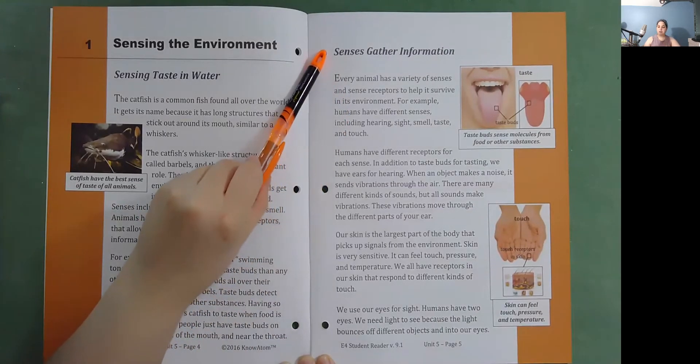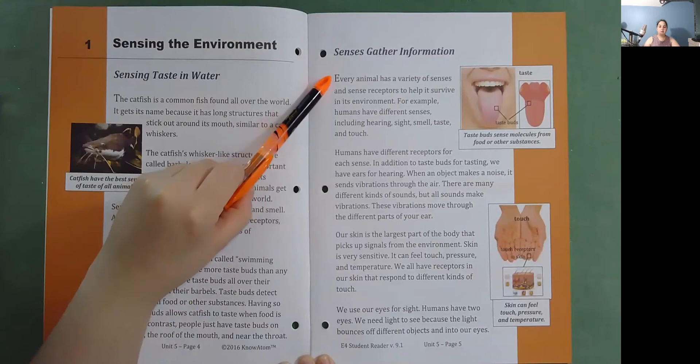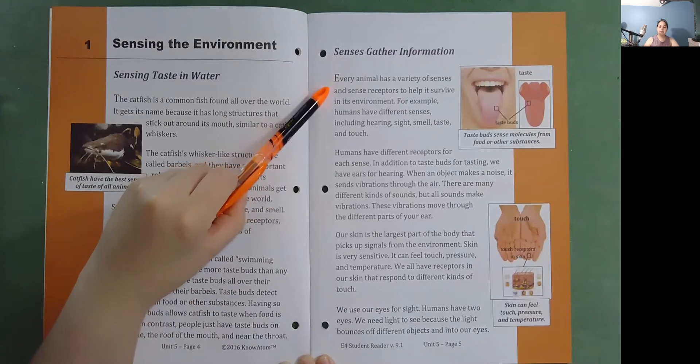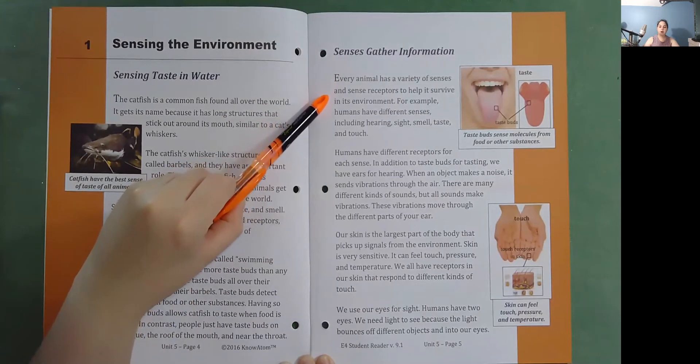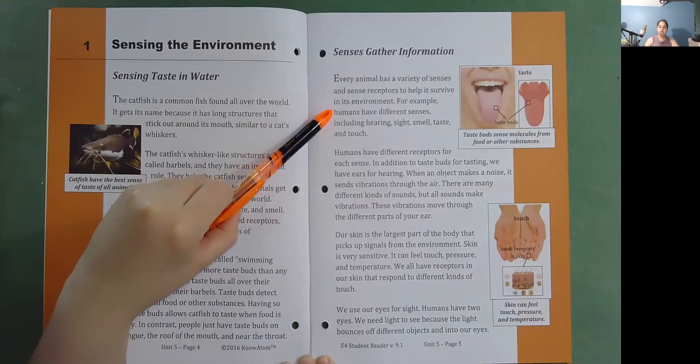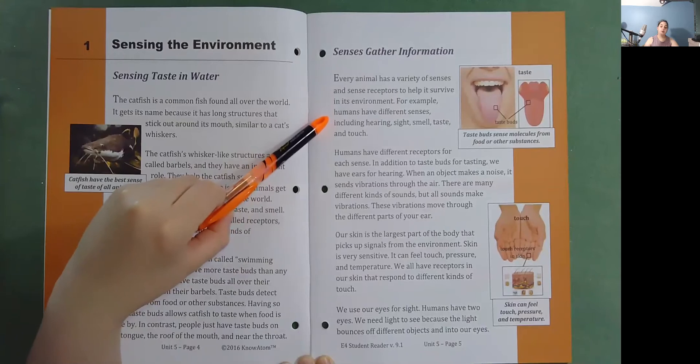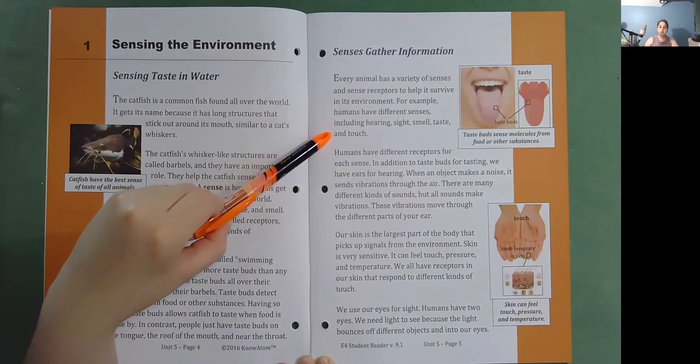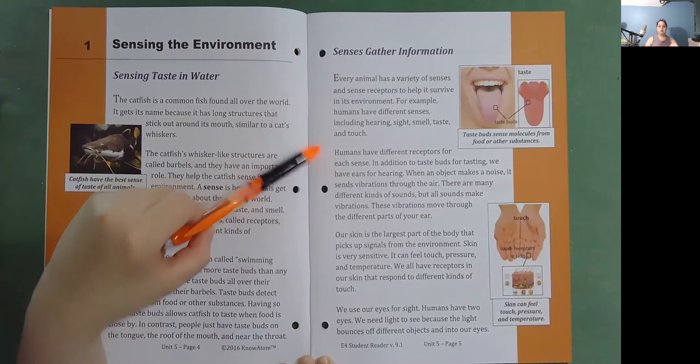Senses gather information. Every animal has a variety of senses and sense receptors to help it survive in its environment. For example, humans have different senses, including hearing, sight, smell, taste, and touch. Humans have different receptors for each sense.